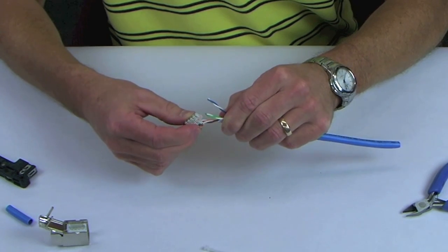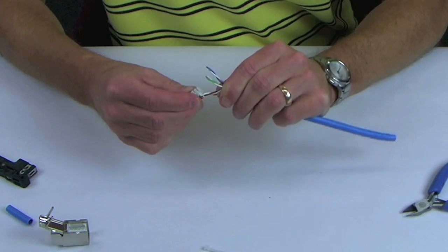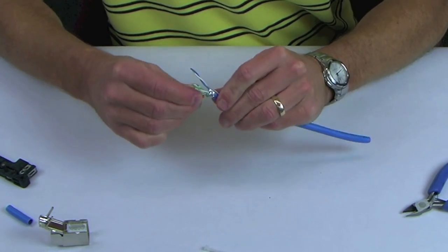Insert the conductors into the color-coded slots. The first two pairs will slide into the wire manager under the bottom two pairs.